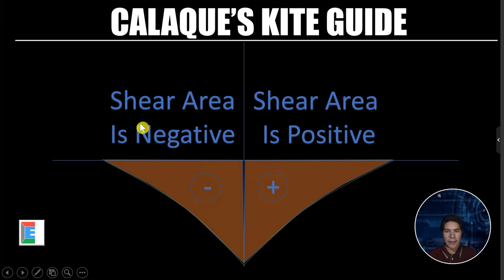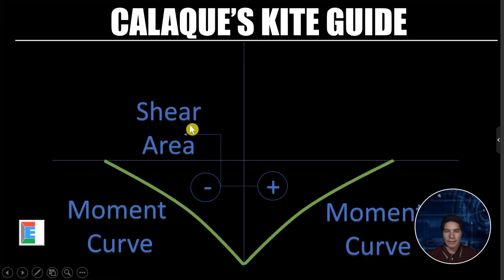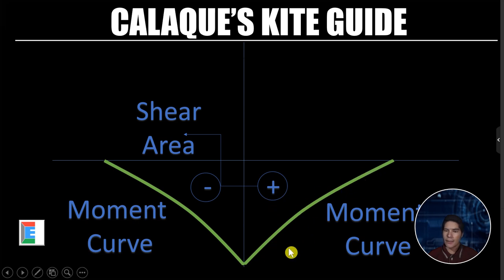For the relationship between shear and moment, we consider the shear area. If the shear area is negative, that falls on the negative side; if the shear area is positive, it falls on the positive side. If the shear area is negative, the corresponding moment curve is decreasing or going down. If the shear area is positive, the corresponding moment curve is increasing or going up.